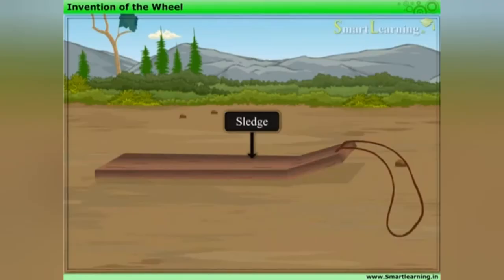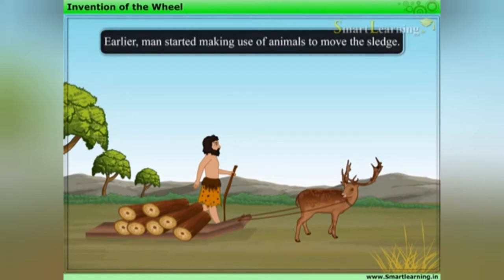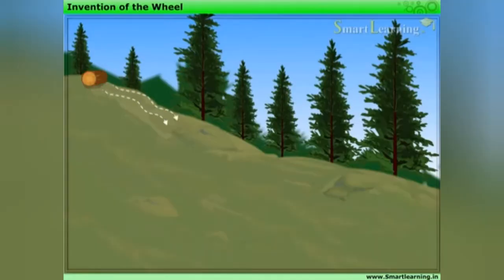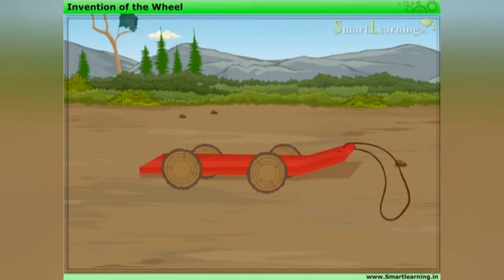Early man developed a sledge. In order to move the sledge, man had to spend a lot of energy, so he started making use of animals. However, it was very difficult to move the sledge on unleveled ground. It is believed that when the early man saw a log of wood rolling down a hill, an idea struck him — if he puts logs of wood under heavy objects, it would be easier and faster to move them. Therefore, the early man started joining small circular wooden blocks to his sledge. This was how the wheel was invented.